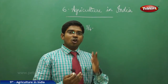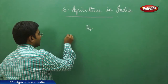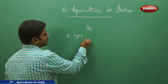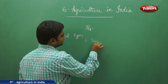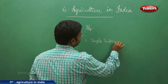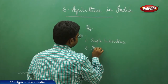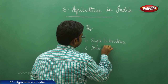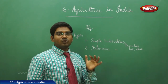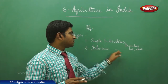Let us analyze what agriculture is and how many types of agriculture there are. We have two types of agriculture. The two primitive, old types that were in existence earlier are simple subsistence agriculture and intensive subsistence agriculture.